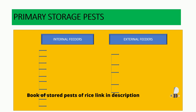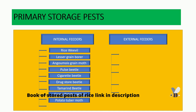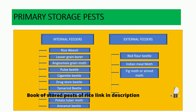Some of the pests under internal feeders include: rice weevil, lesser grain borer, grain moth, pulse beetle, cigarette beetle, drugstore beetle, Trogoderma beetle, sweet potato weevil, potato tuber moth, and Araecerus beetle. Coming to the external feeders, which feed on the outside of the grain: red flour beetle, Indian meal moth, fig moth or almond moth, rice moth, and Khapra beetle.